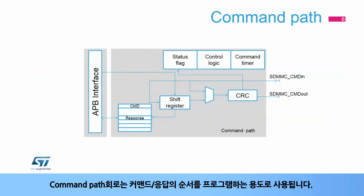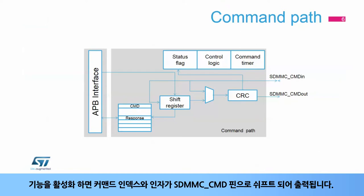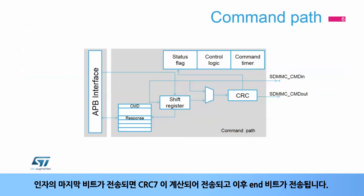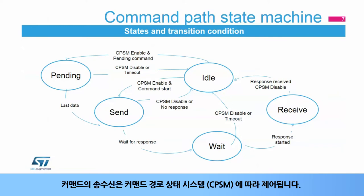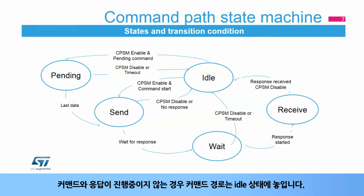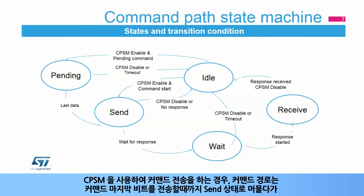The command path circuit is used to program a command and response sequence. When enabled, the command path shifts out the command index and argument on the SDMMC CMD pin. After the last payload bit is sent, a CRC-7 is computed and sent out on the bus before generating the end bit. When a response is expected, the command path is configured to SDMMC CMD in and waits for the device response. The transmission and reception of commands is controlled by the command path state machine (CPSM). When no command or response is in progress, the command path is in idle state. When the CPSM is enabled to send a command, the command path moves to send state until the last bit of the command is sent.